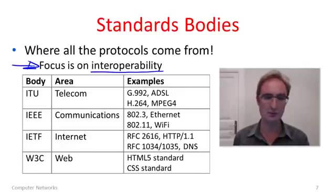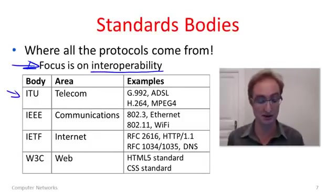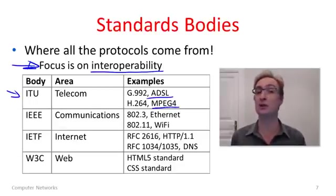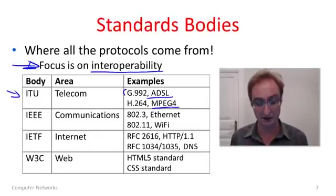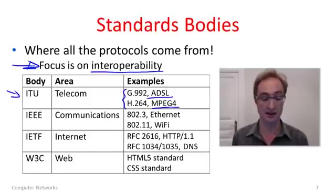There are different standards bodies. In the telecommunications area, there is the ITU — the International Telecommunications Union — which specifies a lot of telecommunications standards. Examples include ADSL, your DSL link used at home. The MPEG-4 standard, used to compress audio and video, is actually an ITU standard. These standards are often called letter standards — you can see the G-dot and H-dot naming conventions. For instance, ADSL is officially called G.992.